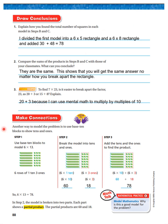Let's look at making connections. Another way to model the problem is to use base 10 blocks to show tens and ones. Step 1: Use base 10 blocks to model 6 times 13. I would have 6 groups of 13: 1, 2, 3, 4, 5, 6. I would break it into a rod of 10 and 3 ones, so 6 rows of 1 ten and 3 ones.